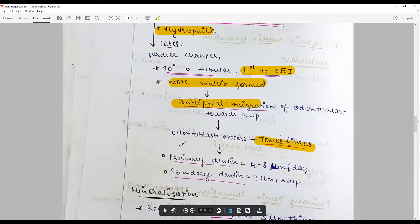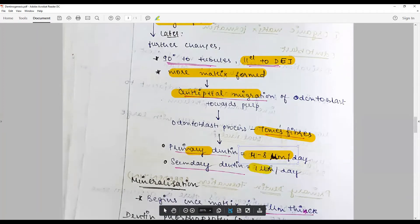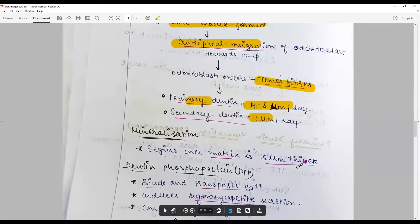The rate of deposition of primary dentin is about 4 to 8 micrometers per day during active secretion. Secondary dentin in the later phases of life is one micrometer per day and even less as it progresses.